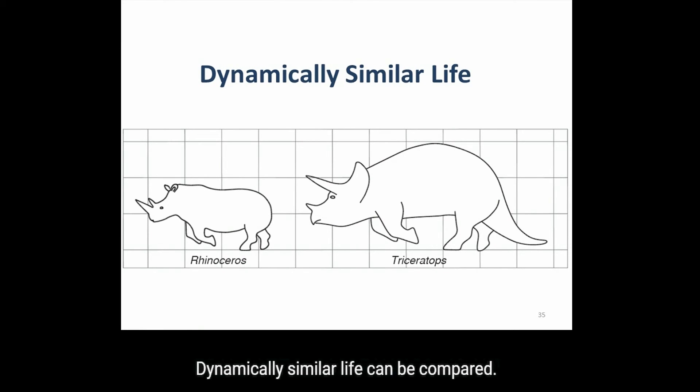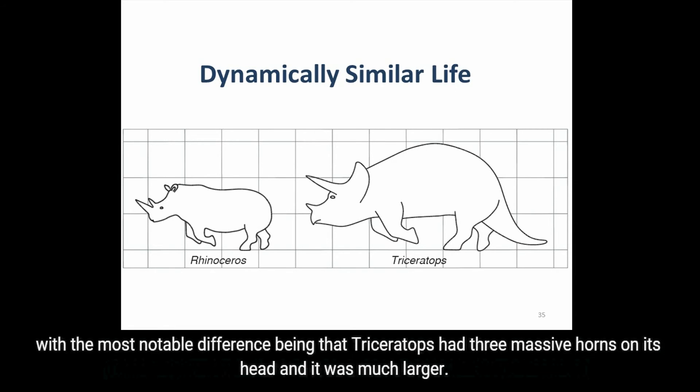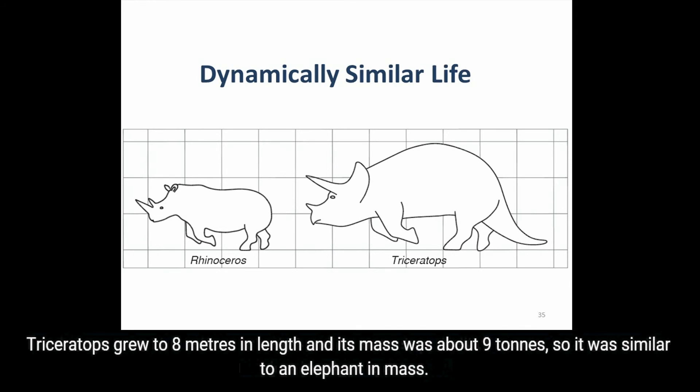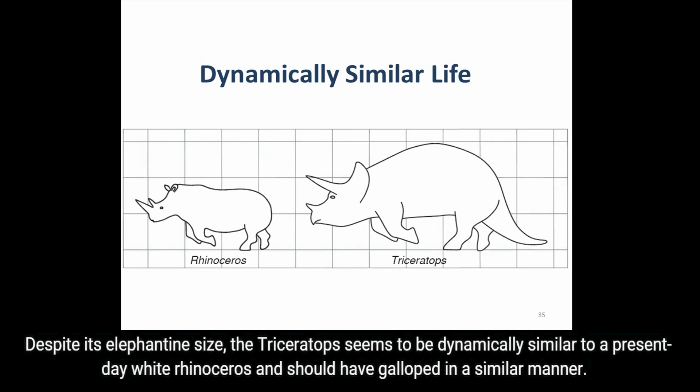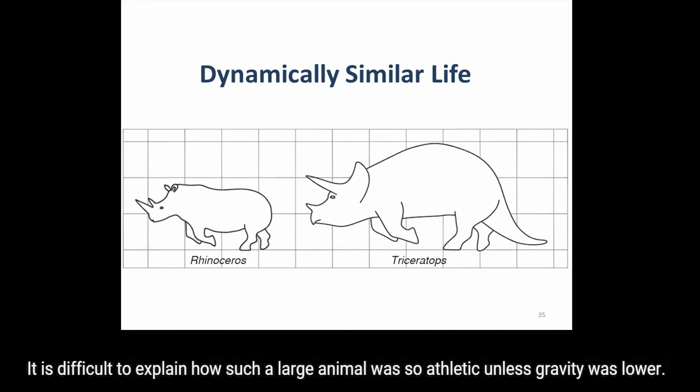Dynamically similar life can be compared. Triceratops was similar in appearance to a present-day rhinoceros, with the most notable difference being that Triceratops had three massive horns on its head and it was much larger. Triceratops grew to 8 meters in length and its mass was about 9 tons, so it was similar to an elephant in mass. Despite its elephant size, the Triceratops seems to be dynamically similar to a present-day white rhinoceros and should have galloped in a similar manner. It is difficult to explain how such a large animal was so athletic unless gravity was lower.